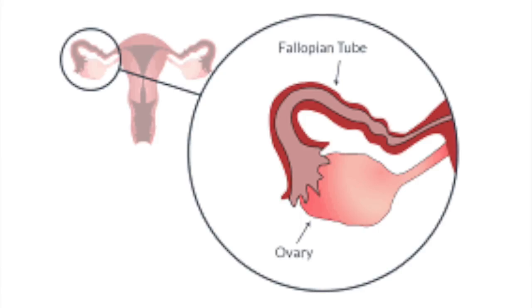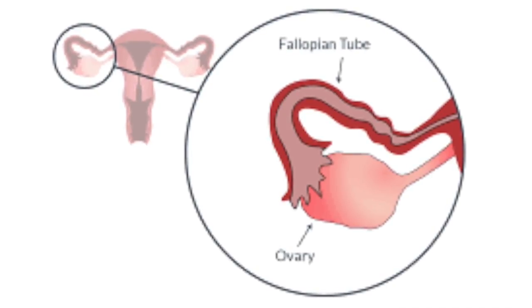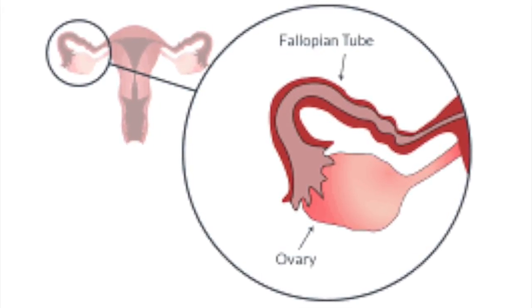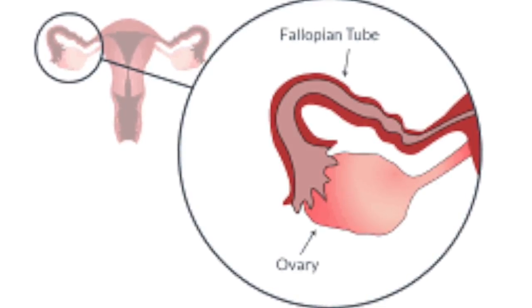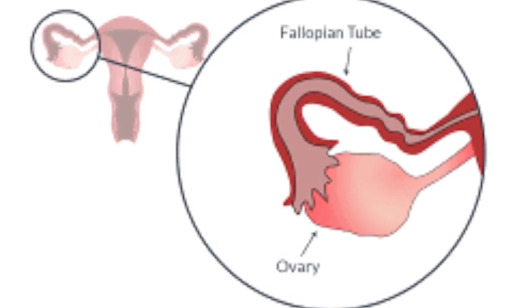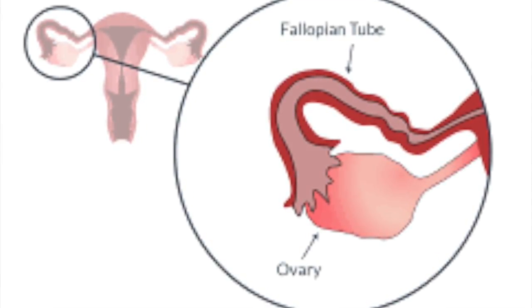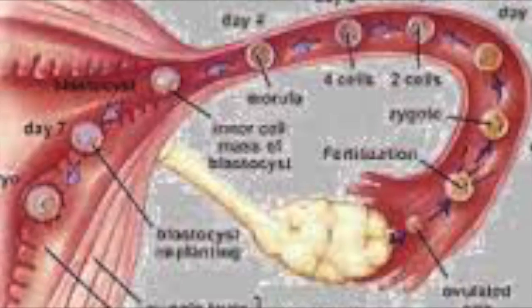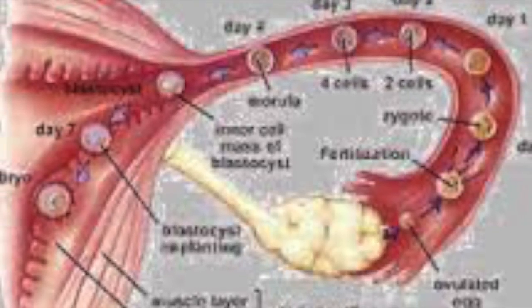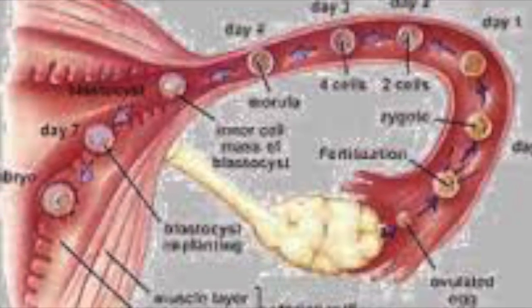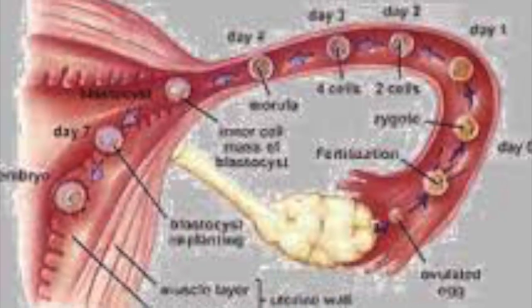Once a female begins ovulation, which occurs when an egg moves from the ovaries into the fallopian tubes and is ready for fertilization, the egg travels into the fallopian tube. While this is happening, the sperm that has been ejaculated into the female's vagina then has the capability to travel from the vagina past the cervix into the uterus and to the fallopian tube to combine itself with the female gamete.